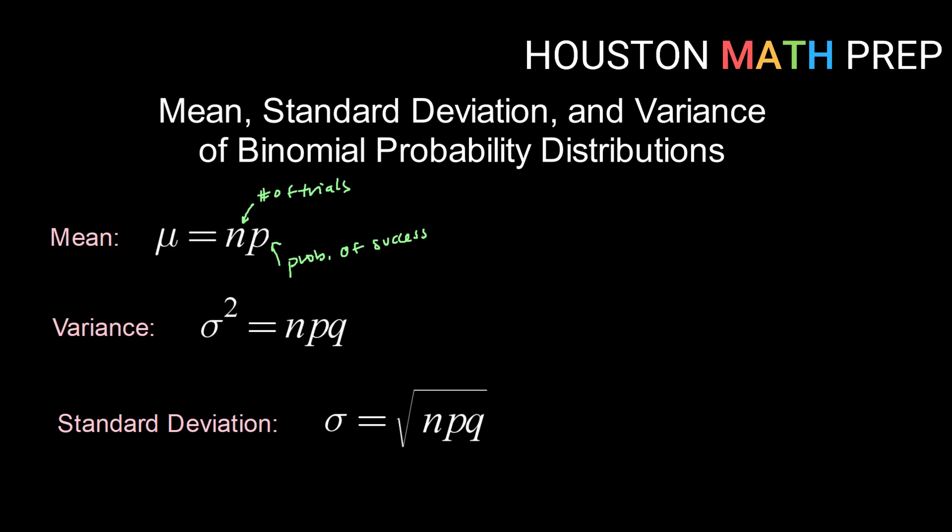Our variance, or sigma squared, is n, which is again the number of trials, times p, which is again the probability of success, times q, which is the probability of failure, which, because we only have two possible outcomes, will be one minus the probability of success, or one minus p.